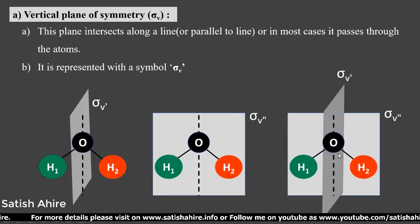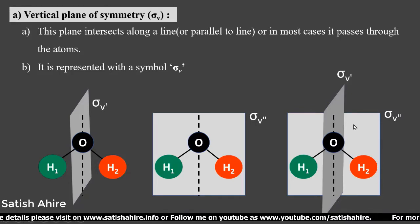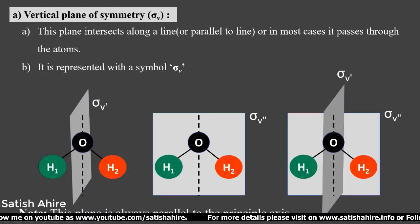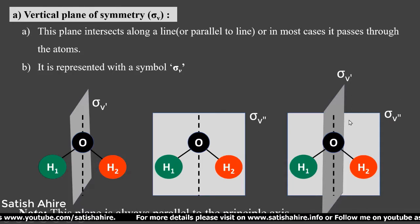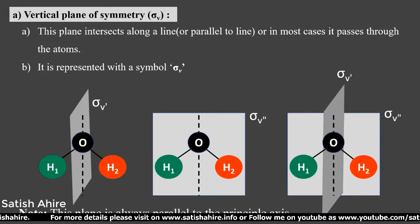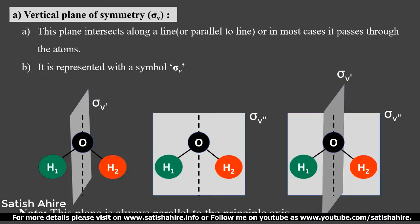Collectively, in a single molecule you can show two planes of symmetry: the first one passes through the oxygen atom and divides the molecule into two equal parts, and the second passes through the oxygen and both hydrogen atoms. Note that this plane is always parallel to the principal axis, and any plane parallel to the principal axis falls in the category of vertical plane of symmetry.